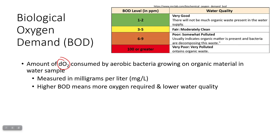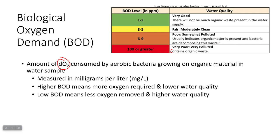A higher BOD means lower water quality. If you have a BOD of 100 or greater, that means your water is very polluted and contains organic waste, which means it's probably not being cleaned properly. Lower biological oxygen demand means less oxygen would be removed if this water was released into a nearby body of water, meaning higher water quality. If your BOD is less than 10, it's probably been treated somewhat, but the lower the number, the higher the quality of the water.